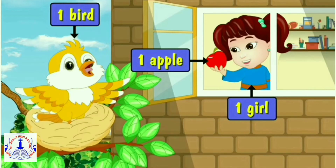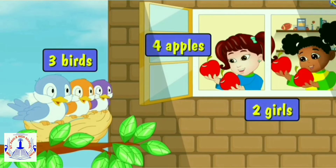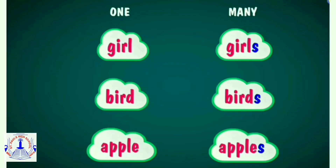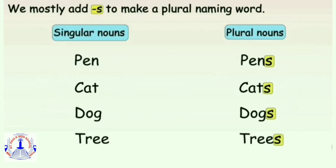In this picture, there is one bird, one apple, and one girl. Whereas in this picture, there are three birds, four apples, and two girls. So this is called a plural noun. One and many: girl, girls; bird, birds; apple, apples. We add S to make plural naming words, as we saw in the story.